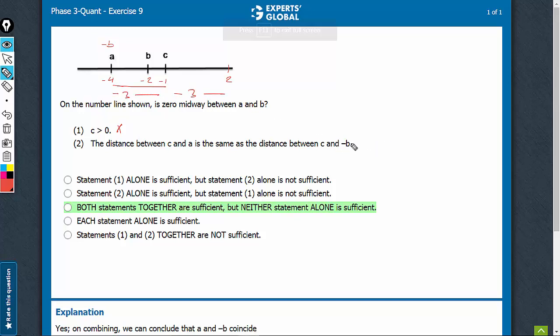In such a case, obviously 0 will not be here - 0 will be somewhere here. In such a case, statement 2 will not be sufficient. This is a very good question. Very few students will be able to see this possibility, and therefore 2 doesn't work.